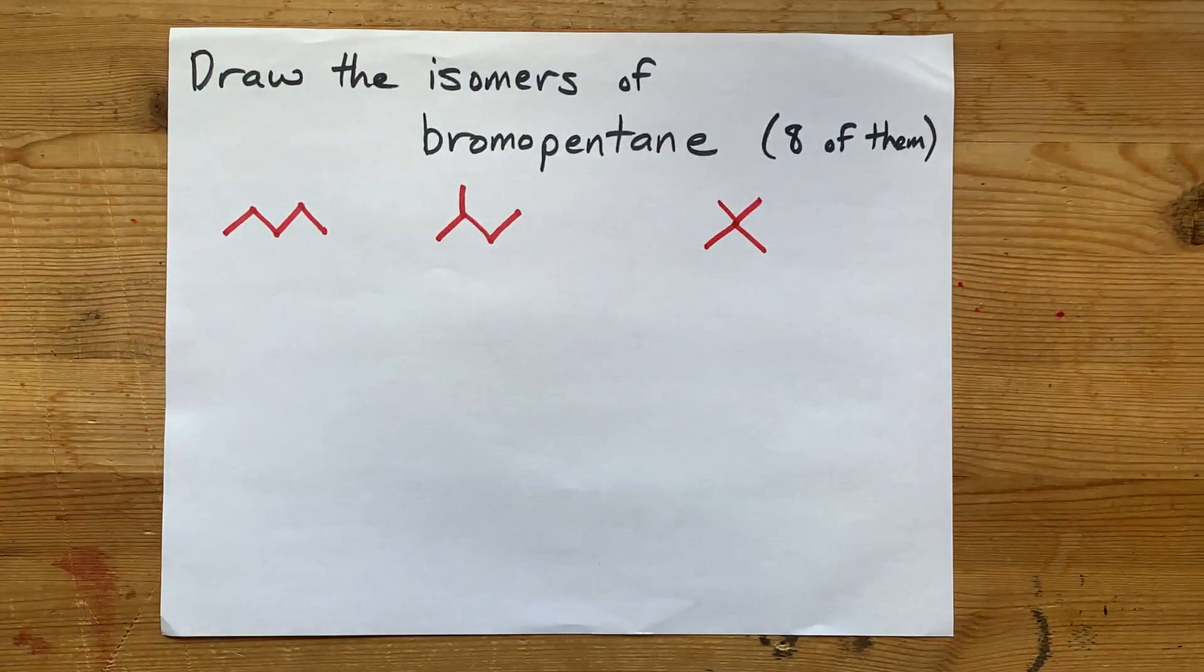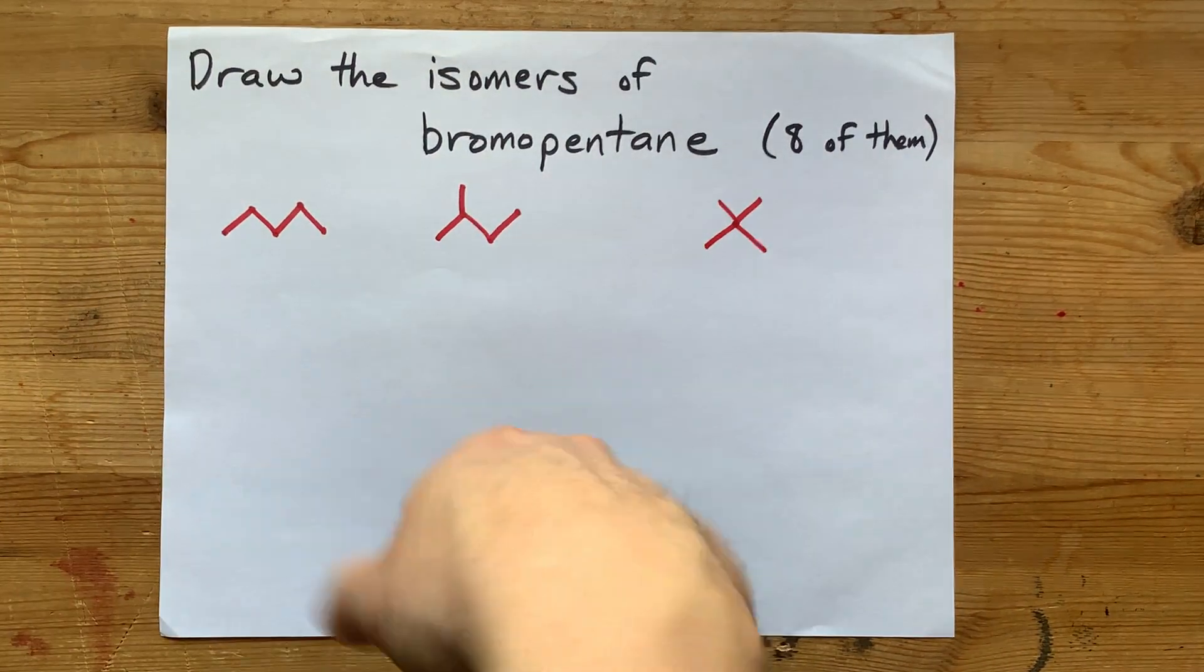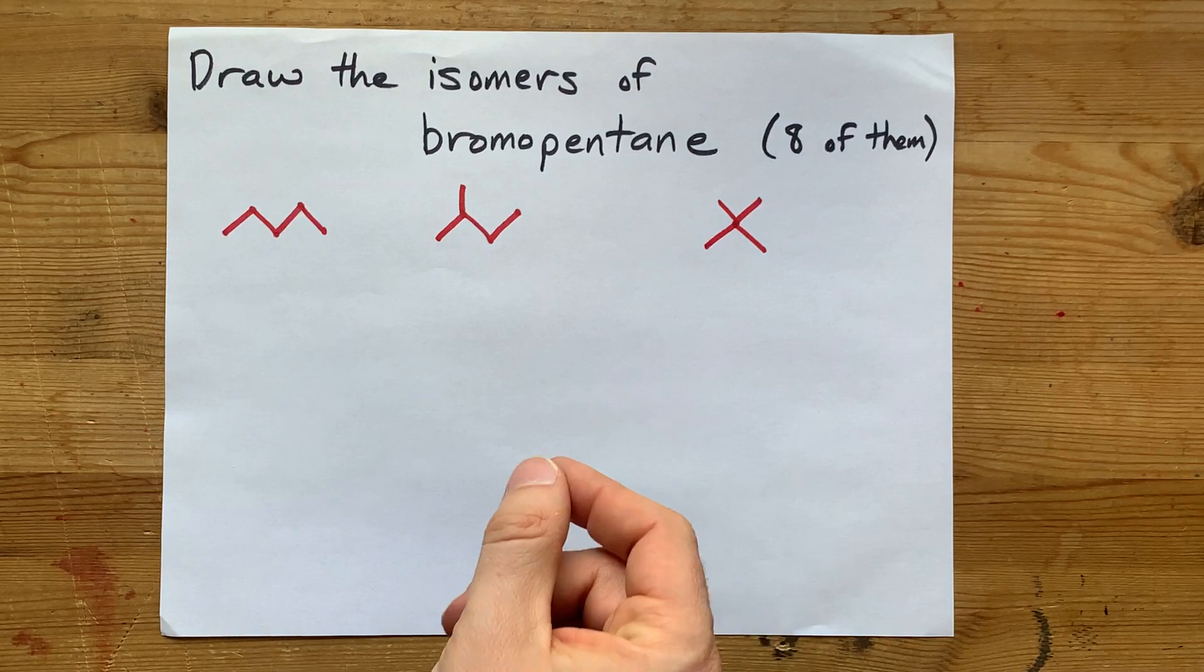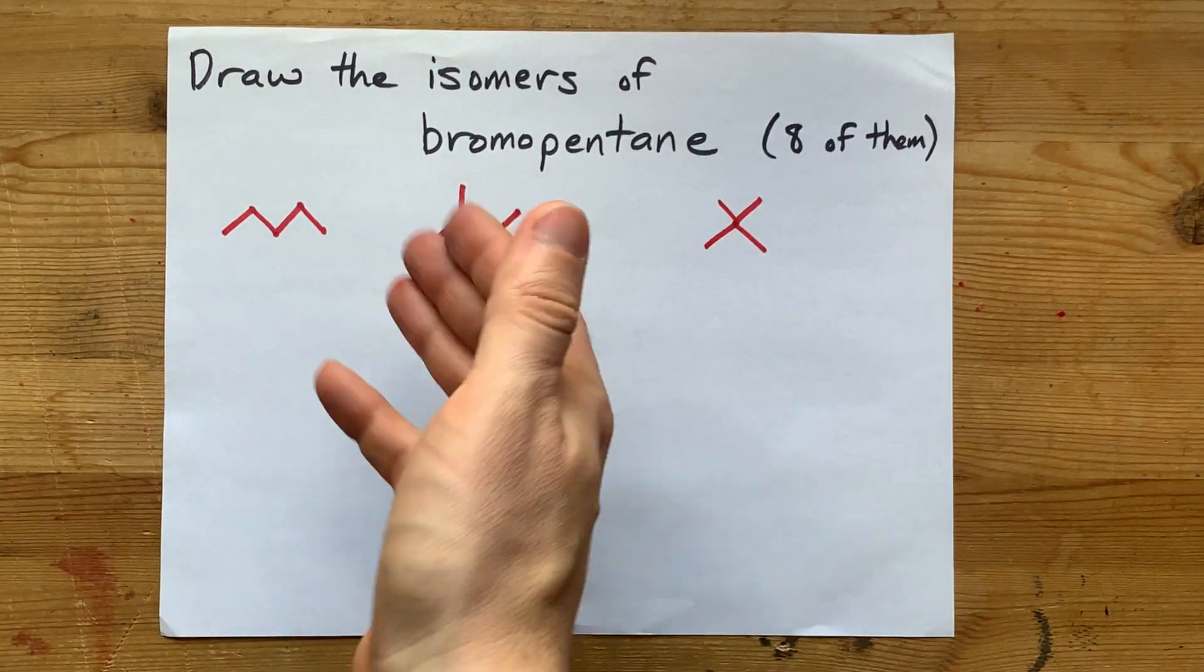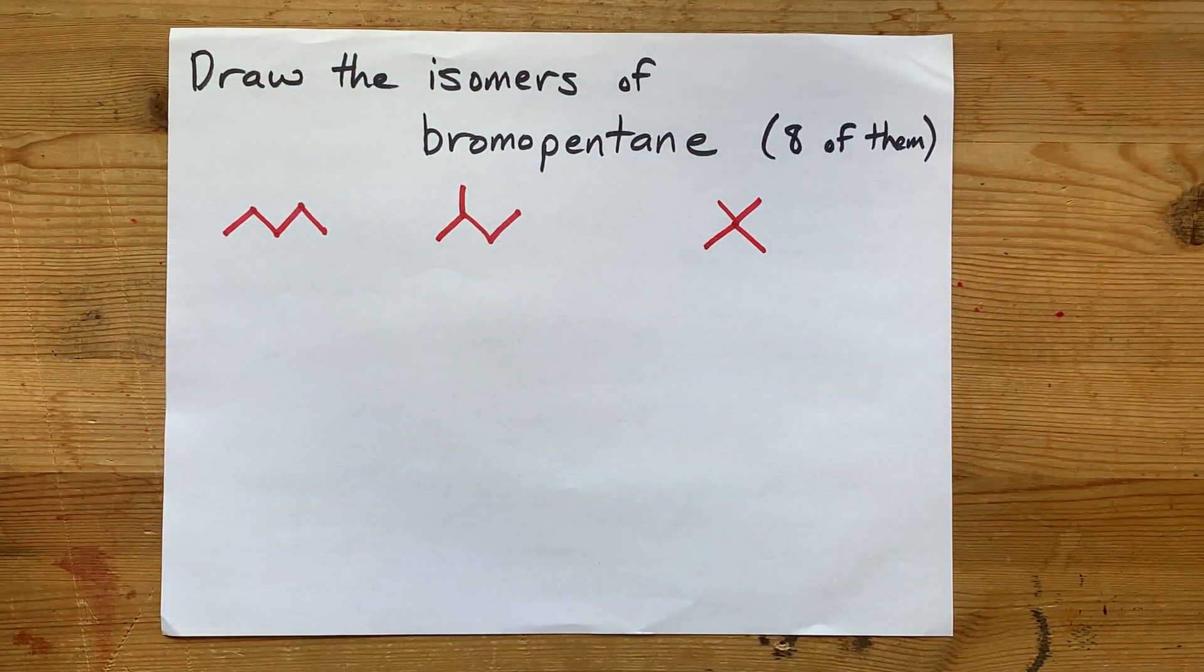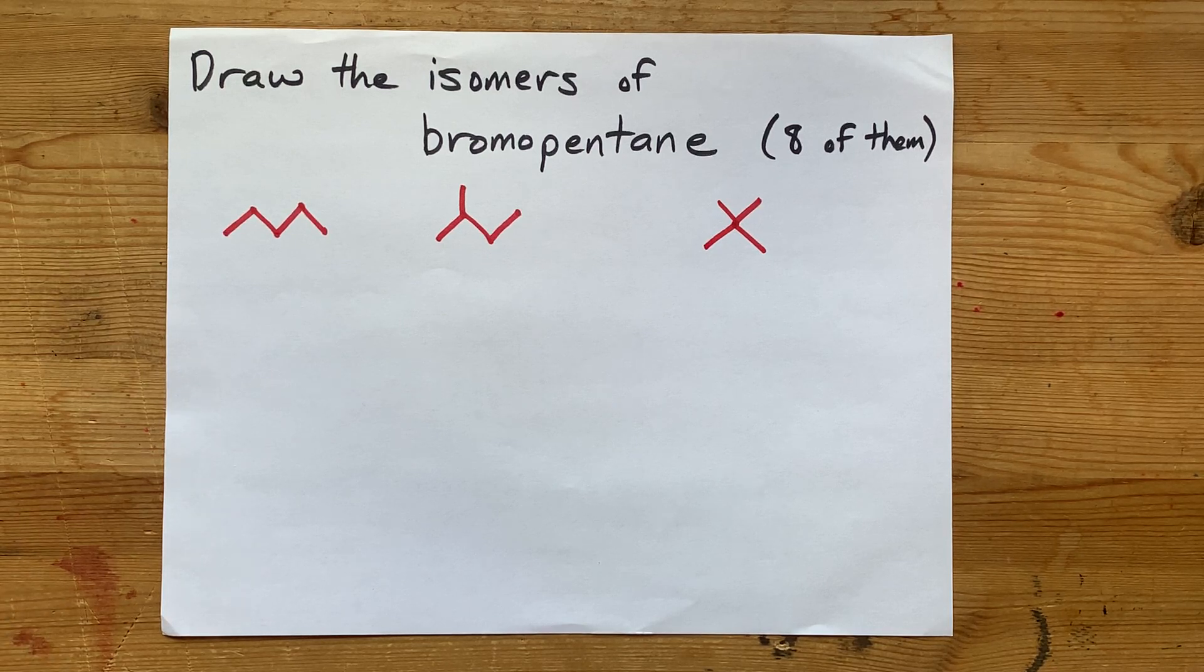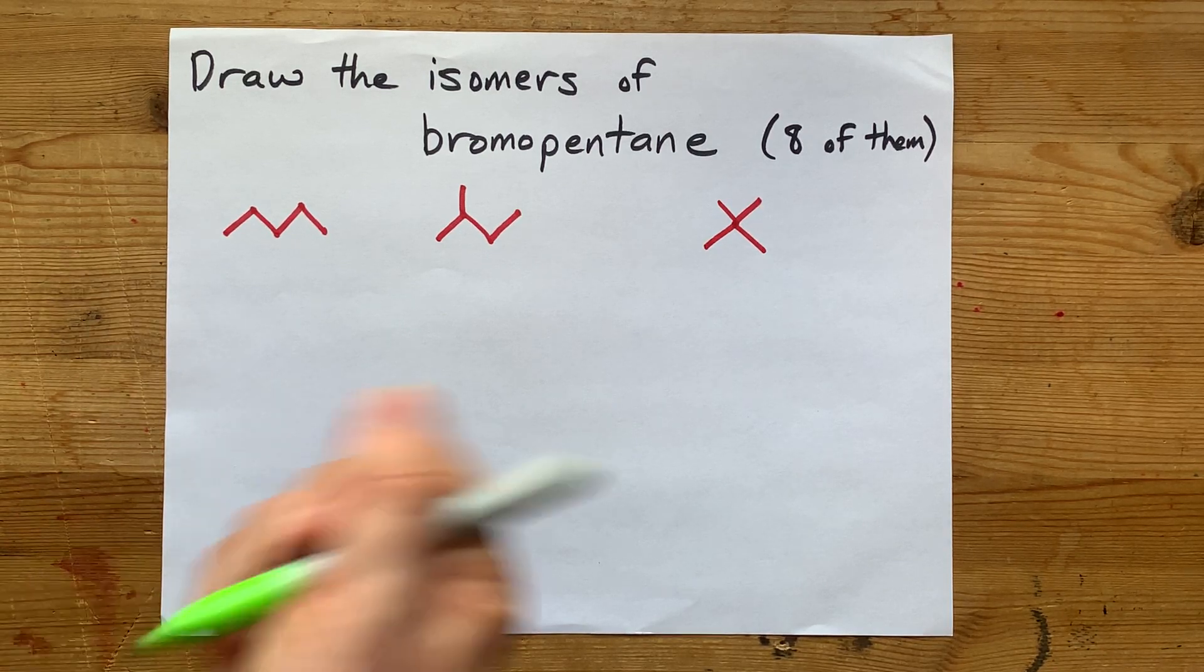But you're here for bromopentane. So now the question is, where are the unique places on each molecule that we could put the bromo? Well, I'm going to show you. I'm going to do this in green.